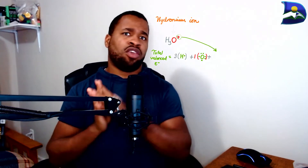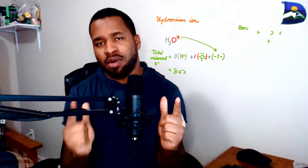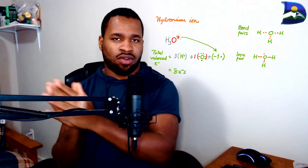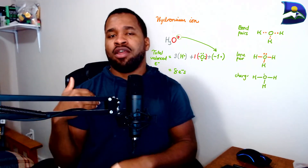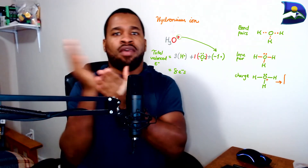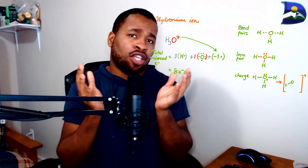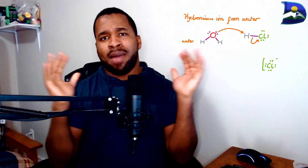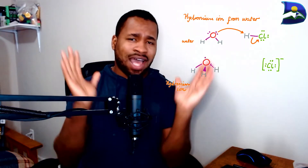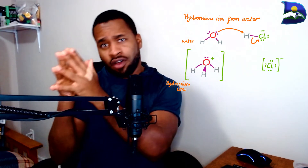Another compound you might come across is the hydronium ion, which is also positively charged. When building your Lewis structure, keep in mind: a positive overall charge means you are losing electrons, and the number depends on the integer beside the charge sign. A negative sign means the overall compound has gained electrons.